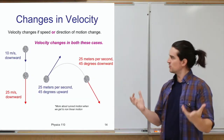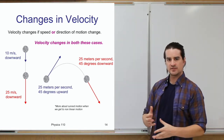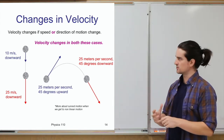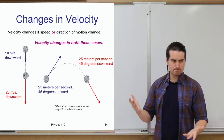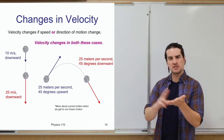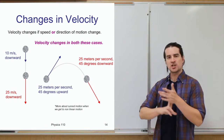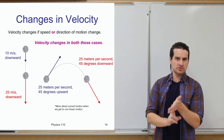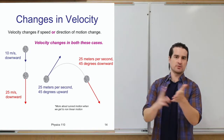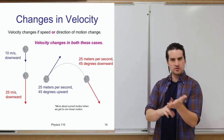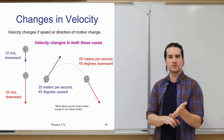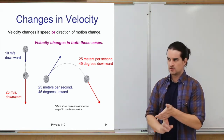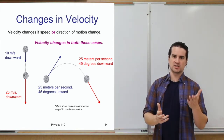Now, how does velocity change? Since velocity is made up of speed and direction, to change an object's velocity, you can change its speed, change its direction, or change both. But you need to change at least one of those things. If either or both change, the velocity of that object has changed.